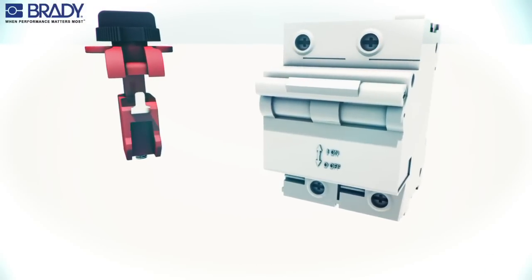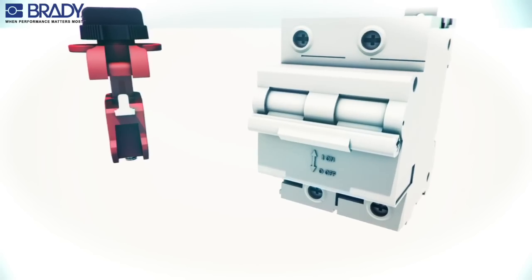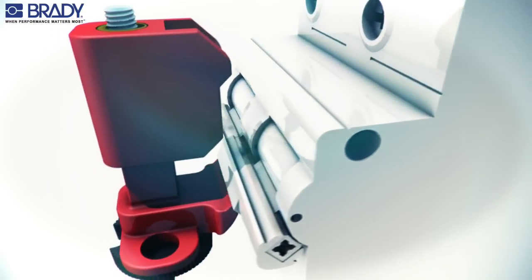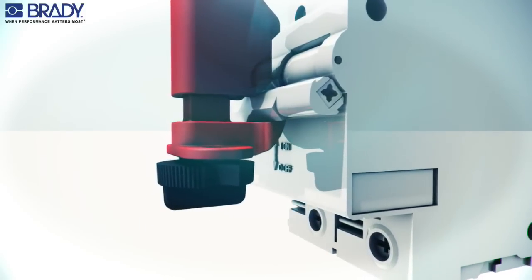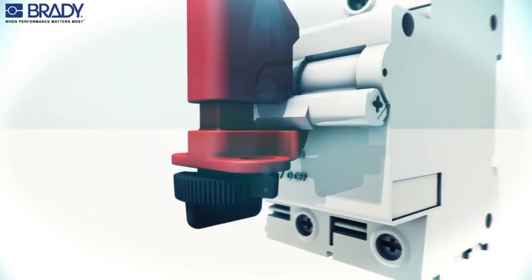Tie bar method: Place the circuit breaker in the off position. Put the metal clip under the tie bar and between the poles. Rotate the thumb wheel clockwise to secure the lockout device to the circuit breaker.